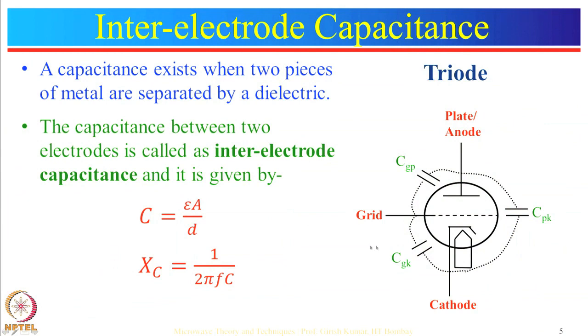Let us start with inter-electrode capacitance. A capacitance exists between two metal plates separated by a dielectric. Taking the example of a vacuum tube triode — in a triode there are three electrodes: grid, plate, and cathode. These electrodes are separated by dielectric air, which has dielectric constant one. So there must exist capacitance between the electrodes of the triode, and these are known as inter-electrode capacitances.